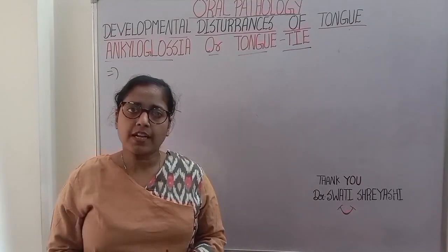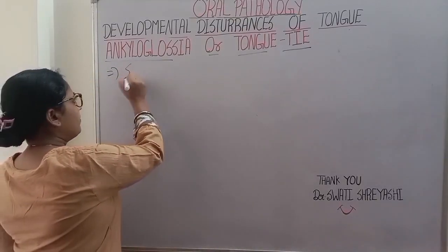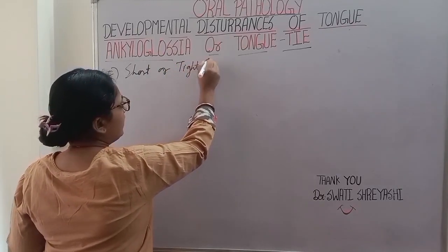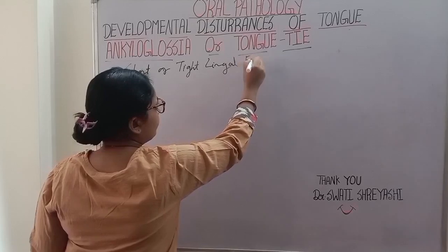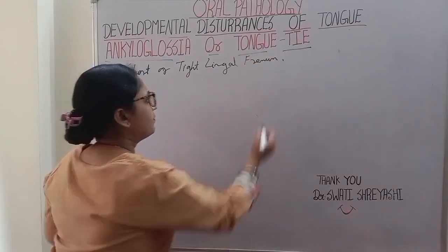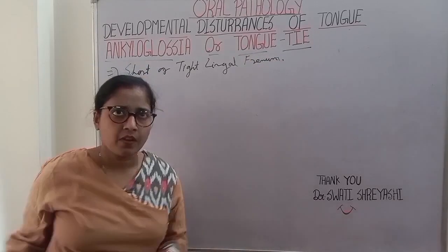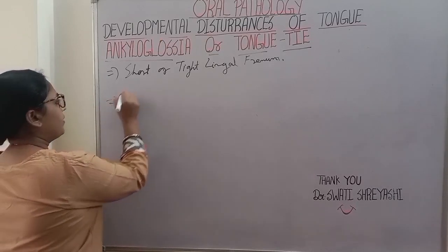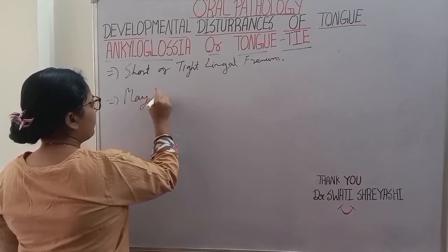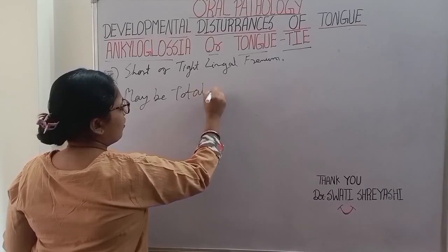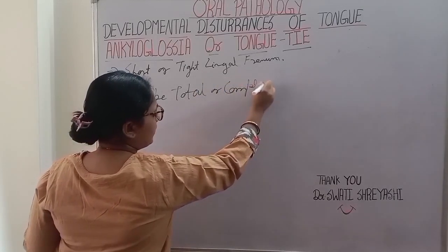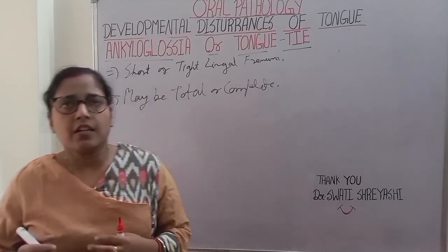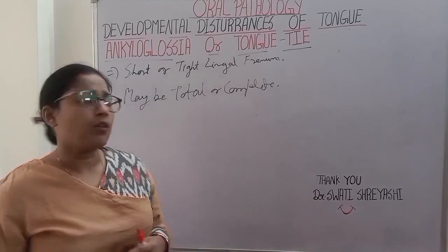Ankyloglossia involves a short or tight lingual frenulum that restricts spring movement of the tongue. It may be total or complete, where the ventral surface of the tongue is fused to the floor of the mouth.